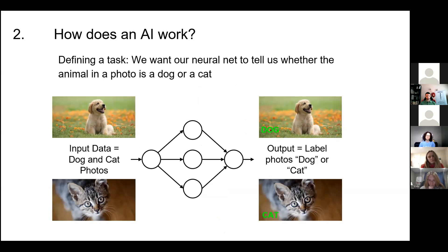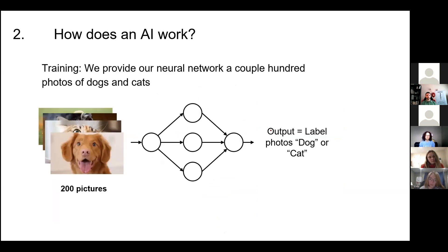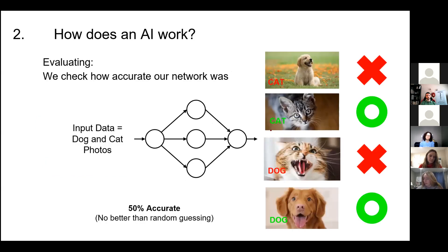Let's say we want to create a neural network for real this time — one that can view a picture and label it as a cat or a dog. Our input is cat and dog pictures, and we want our output to be labeled versions of those pictures. We start with a simple neural network of just five neurons, each transforming its input a little and sending it to the next neuron. We train it by providing a couple hundred photos of dogs and cats, asking it to label all pictures as either a dog or a cat. This neural network got half the labels right and half wrong — no better than guessing. But that's okay.